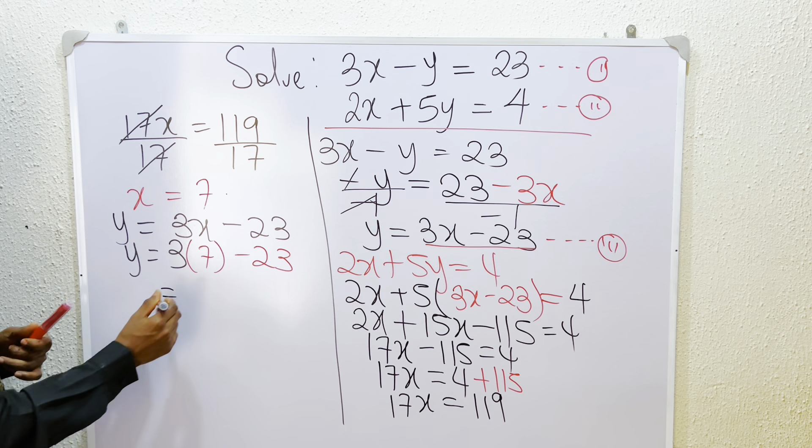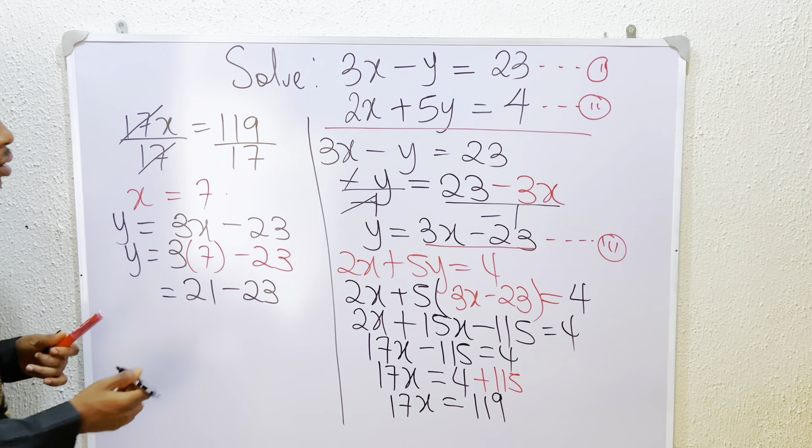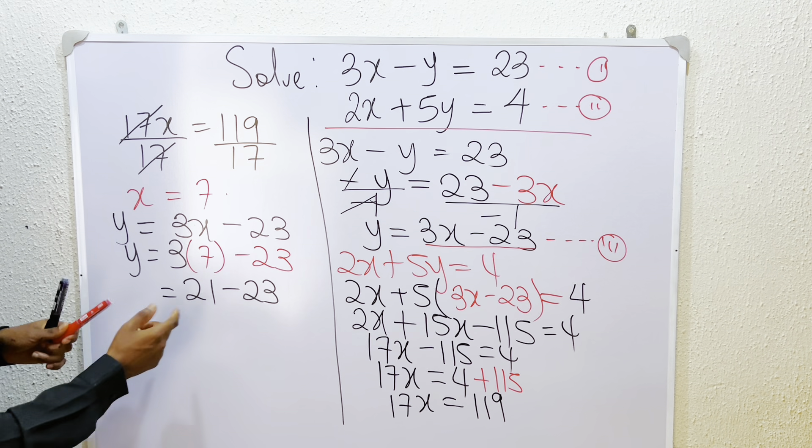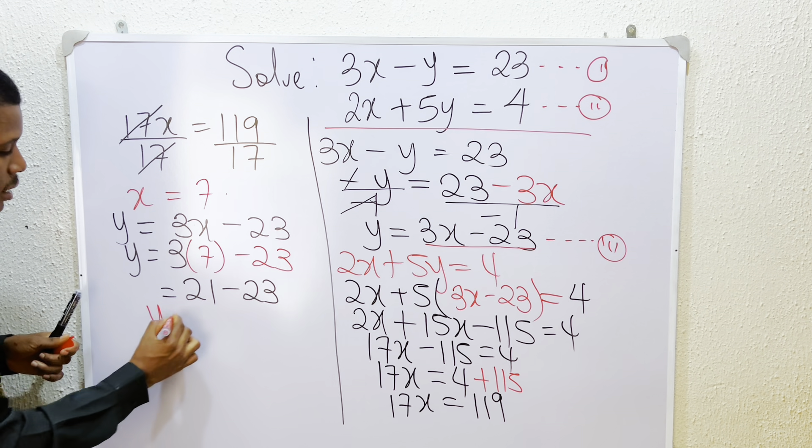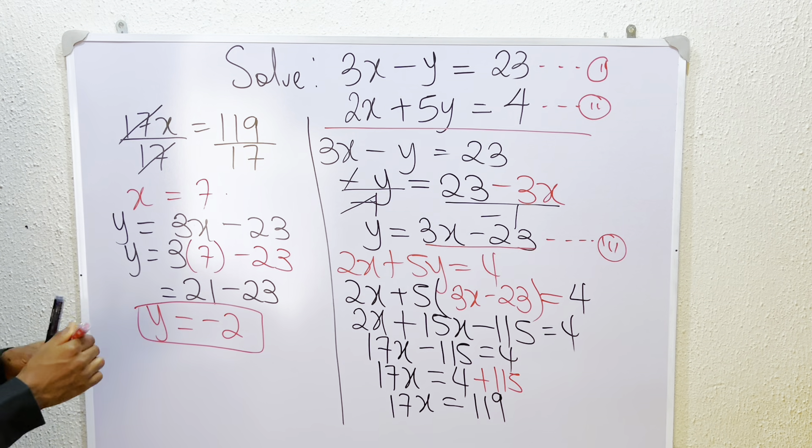The answer becomes 21 minus 23. And 21 minus 23 is that y is equals to minus 2. So y is actually minus 2 here.